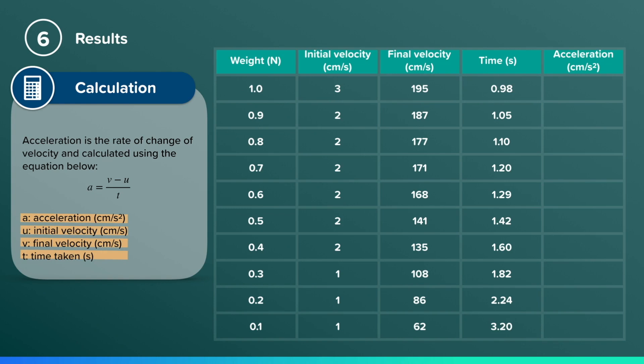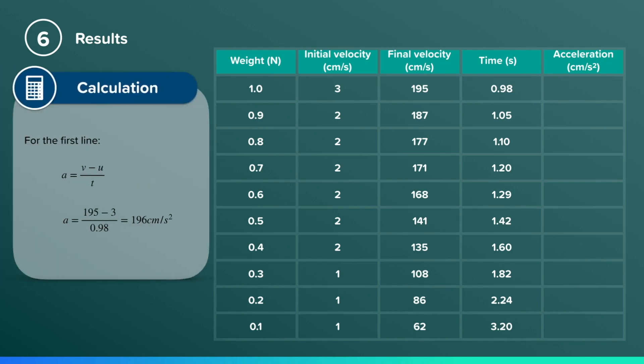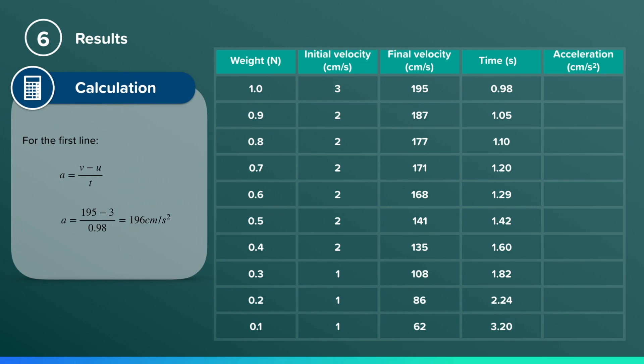Be careful as your data loggers might be recording in centimeters per second. Make sure your units are consistent. As an example, for the first line, acceleration is equal to 195 minus 3 divided by 0.98, which gives you 196 centimeters per second squared. Complete the same calculation for all other data points.